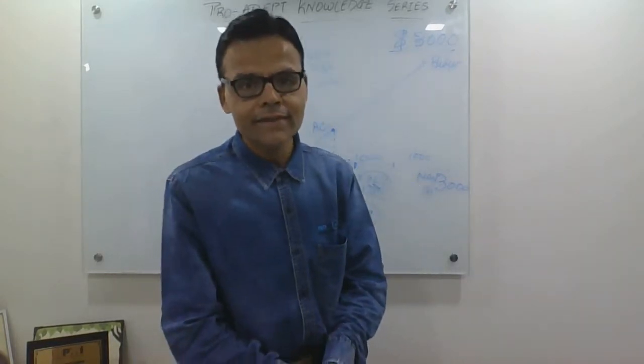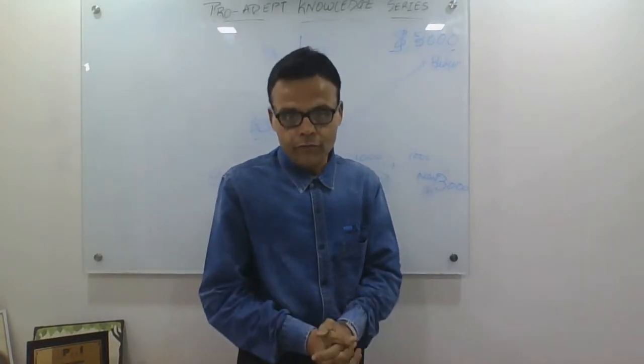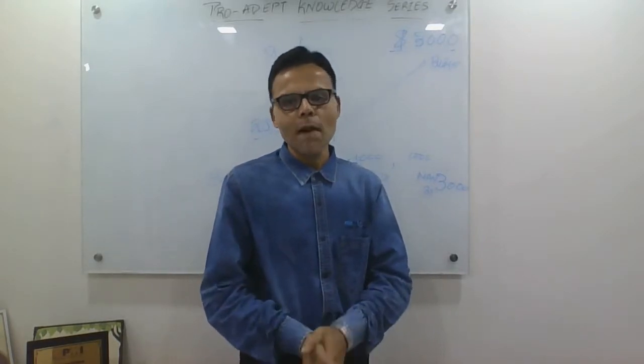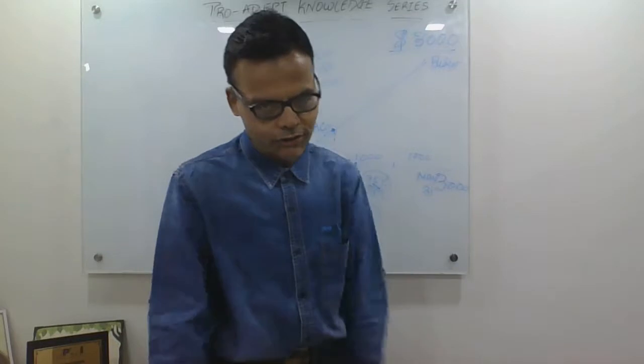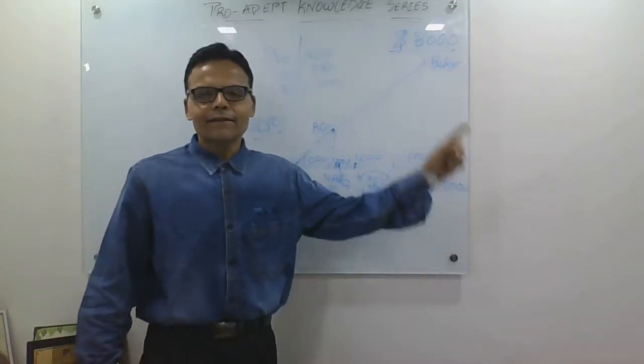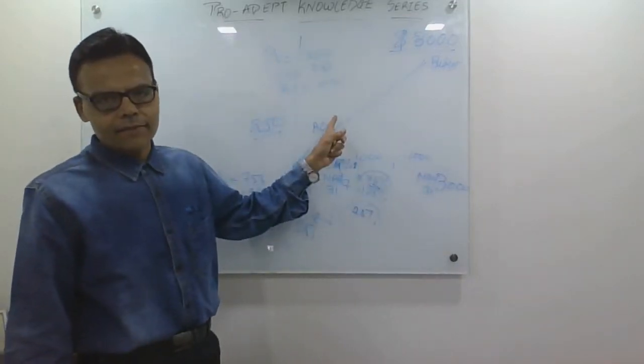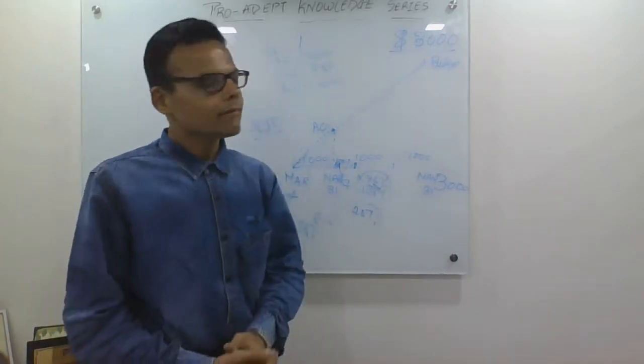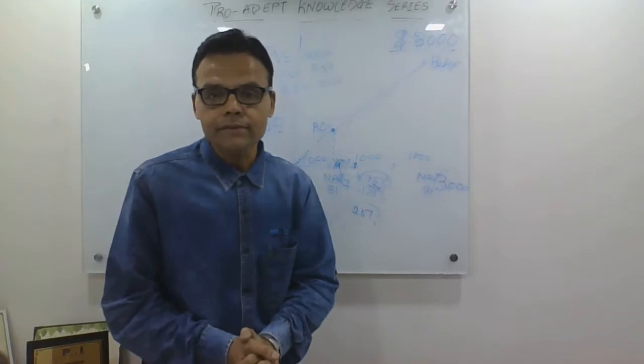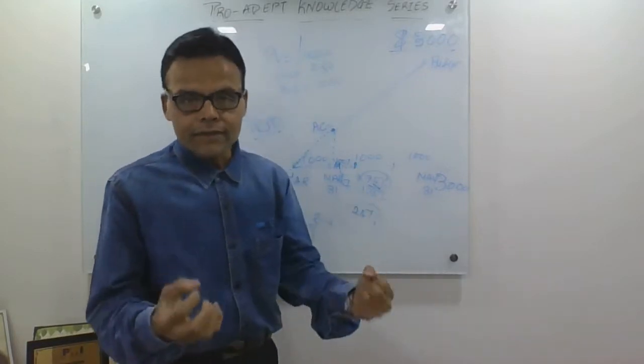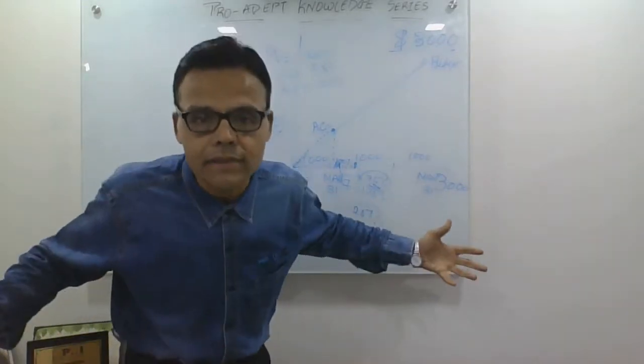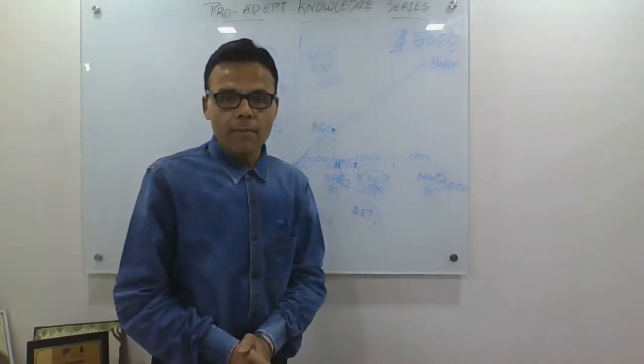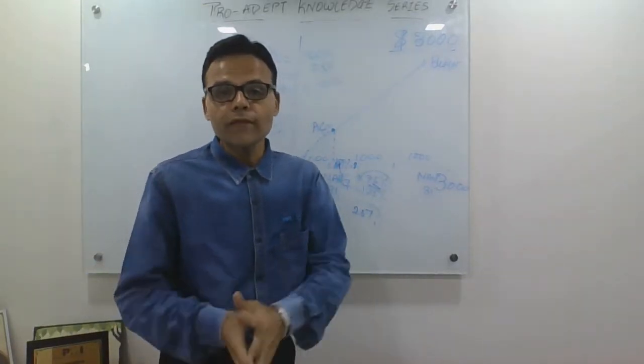In case you have missed the first and second part of the video or this series, please ensure that you go back to my previous videos and watch. This is where we left last time, where I explained the concept of earned value. I explained what happens when your work done is only 75%, you are over budget by 25% or absolute 250 number, and you are behind schedule by 250 or 25%.